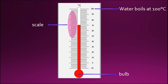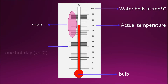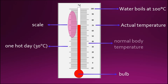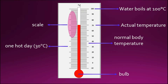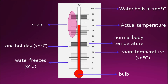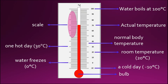Water boils at 100 degrees Celsius. This is the actual temperature. One hot day is 30 degrees Celsius. Normal body temperature is 37 degrees Celsius. Room temperature is 20 degrees Celsius. Water freezes at 0 degrees Celsius. A cold day is negative 10 degrees Celsius.